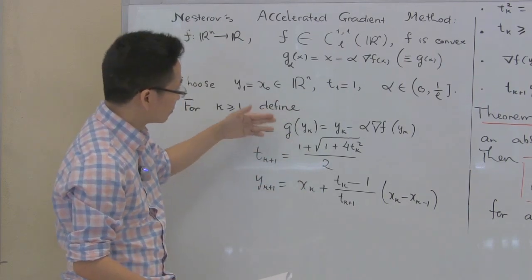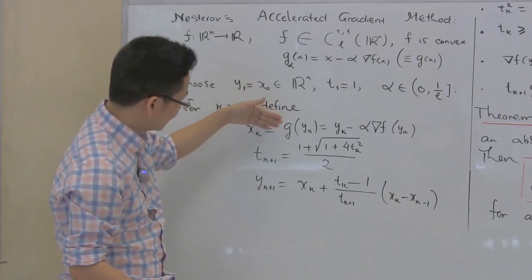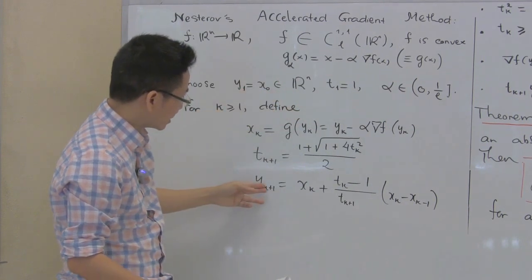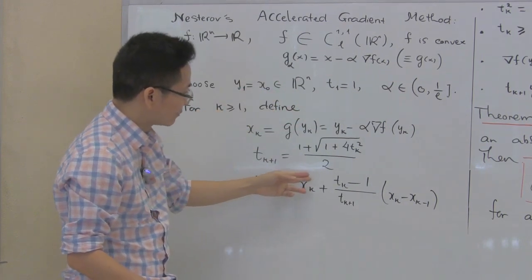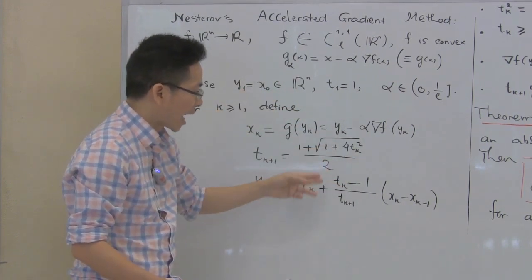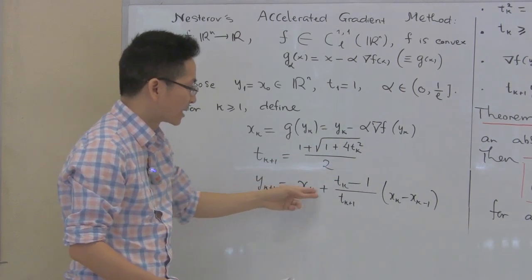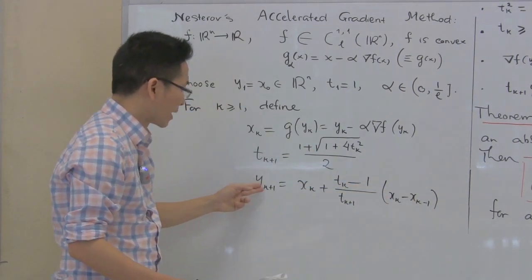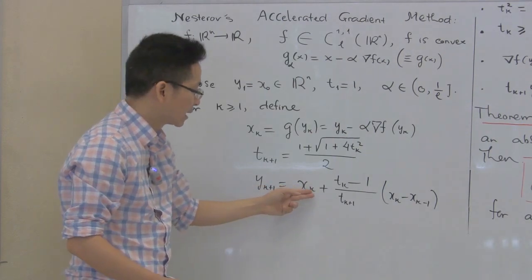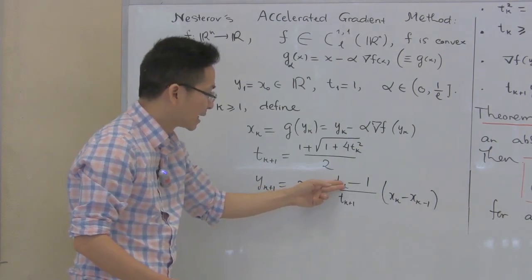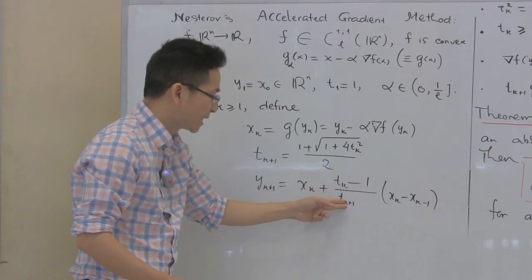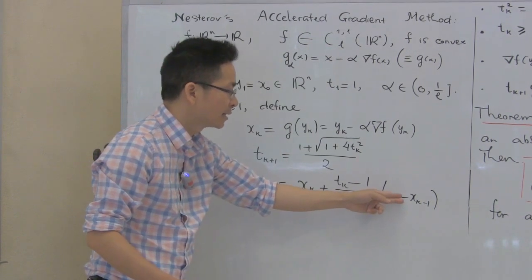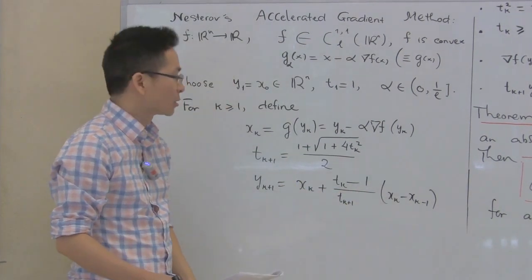After we have found x_k, t_k, and t_{k+1}, y_{k+1} is defined as an affine combination of x_k and x_{k-1}. Specifically, y_{k+1} equals x_k plus (t_k - 1)/t_{k+1} times (x_k minus x_{k-1}).